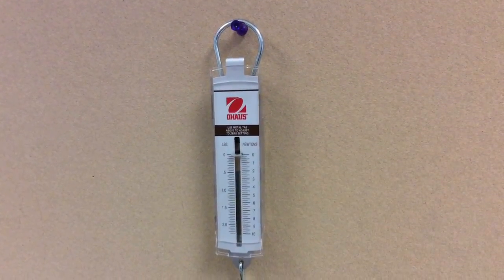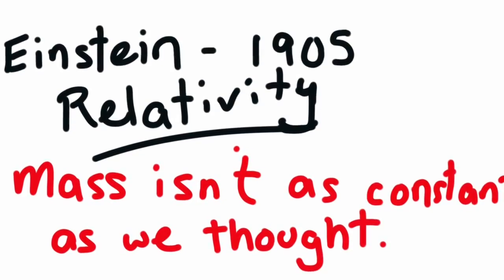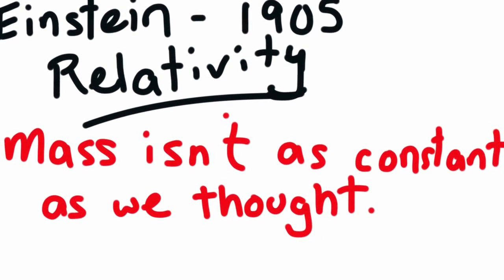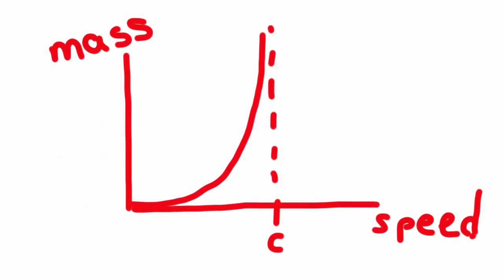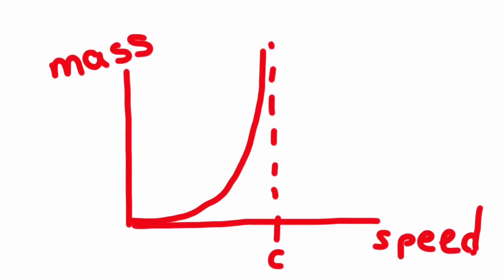And although I want you to think of mass as constant, if something is moving near the speed of light relative to you, turns out that your measurement of its mass would not be the same as its rest mass. Einstein, 1905.